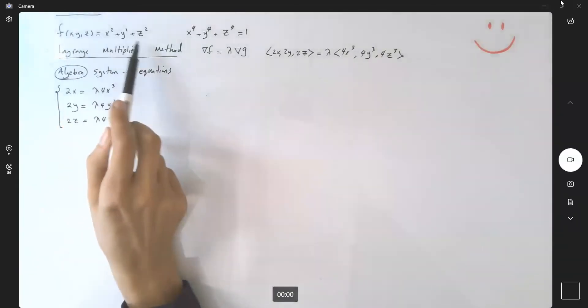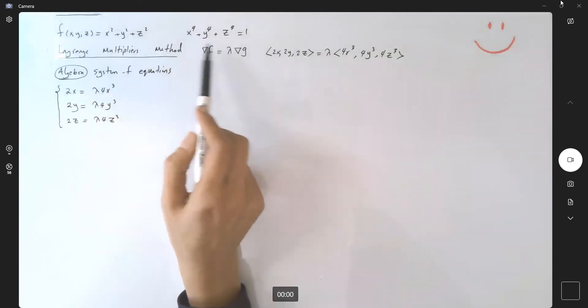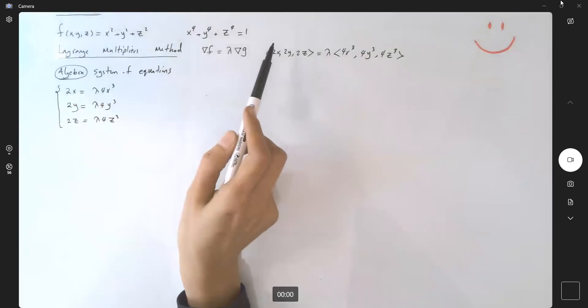Let's take a look at the next question. We want to maximize and minimize the function with constraint x^4 + y^4 + z^4 = 1.